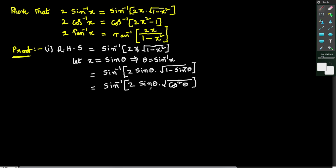That equals sin⁻¹(2 sin θ · √(1−sin²θ)). We know from trigonometry that 1 − sin²θ = cos²θ, so in place of 1 − sin²θ we write cos²θ. Since cos²θ = (cos θ)², the square root and the square cancel, leaving cos θ. So we get sin⁻¹(2 sin θ · cos θ).